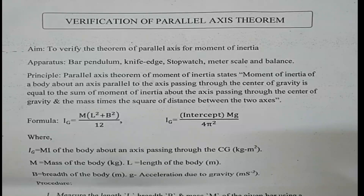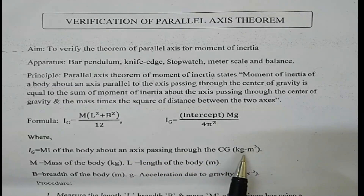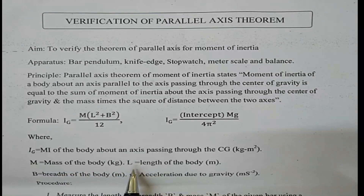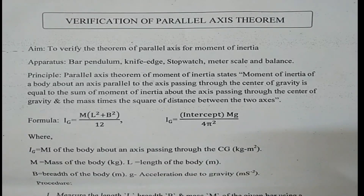In the above formula, Ig is the moment of inertia of the body about an axis passing through the center of gravity, measured in kg·m². Using the physical balance, you measure mass m in kg. L is the length of the body in meters, and B is the breadth of the body in meters. G is acceleration due to gravity in m/s² — normally given as 9.8 m/s².